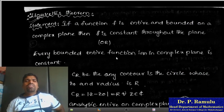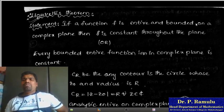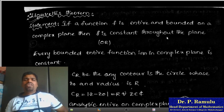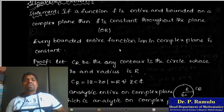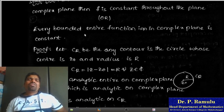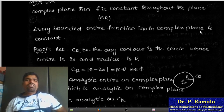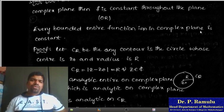Liouville's theorem. Statement: If a function f is entire and bounded on the complex plane, then f is constant throughout the plane. Equivalently, every bounded entire function in the complex plane is constant.